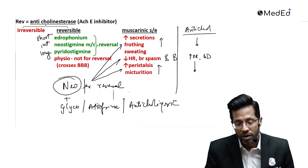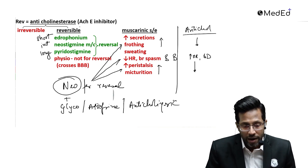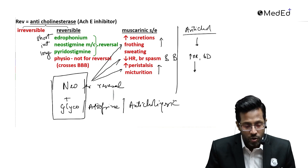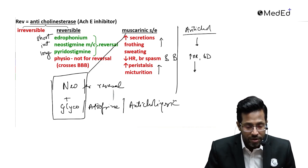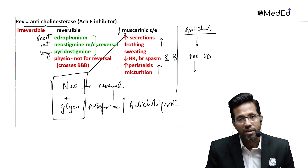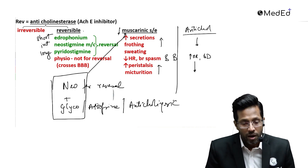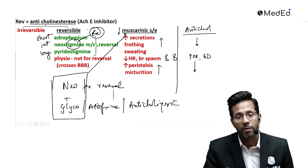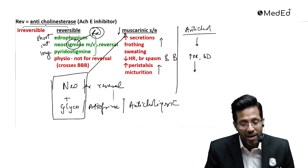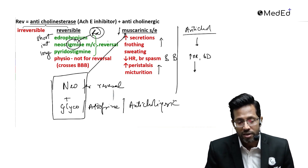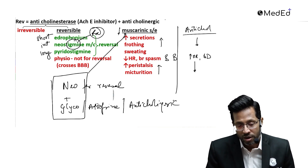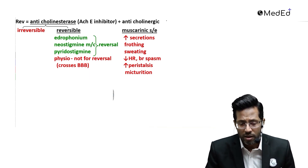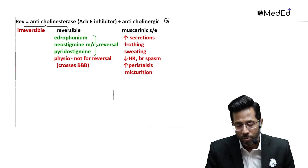Anticholinergics like atropine do the opposite things: they decrease secretions, increase heart rate, act as a bronchodilator, and decrease peristalsis. Remember: neostigmine for reversal of muscle block should never be given alone — always combine it with an anticholinergic drug, which can be glycopyrrolate or atropine.